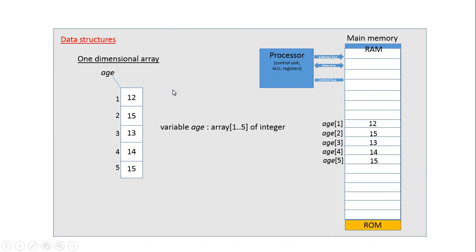Following on from single entity data structures is the very simple one-dimensional array. This is where you want to group together values under one name. If you had a set of prices of items in a shop, rather than having price_of_jam, price_of_bread, price_of_toilet_rolls, you could just say 'price' and then refer to price one, price two, price three, and so on. This makes the organisation of data much simpler — anything you want to do, like search, update, or sort prices, you can do on the one name, passing it to the associated module without having to pass over masses of individual variables.